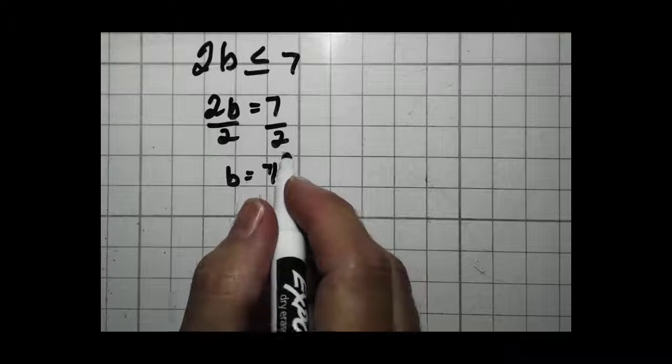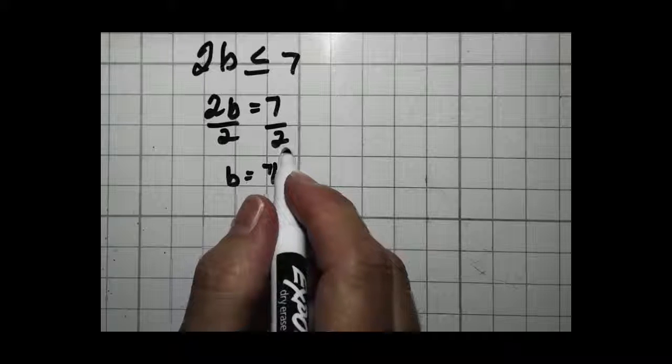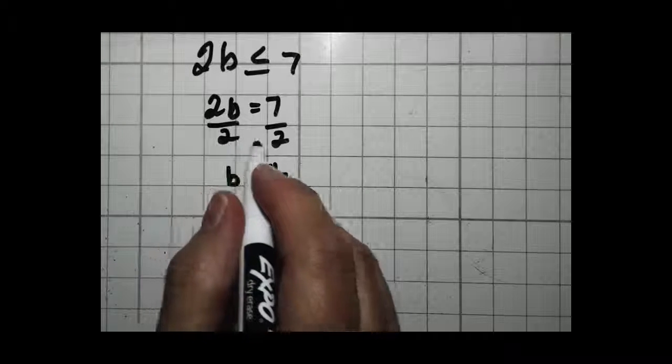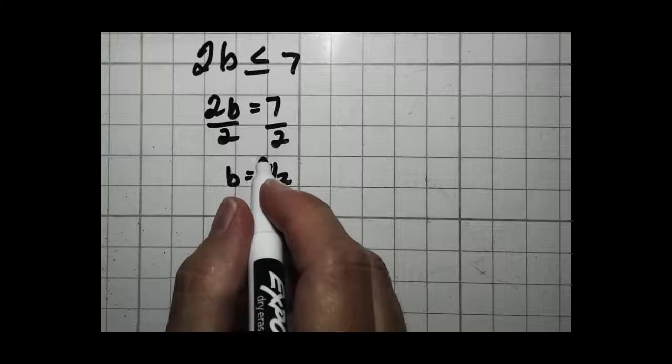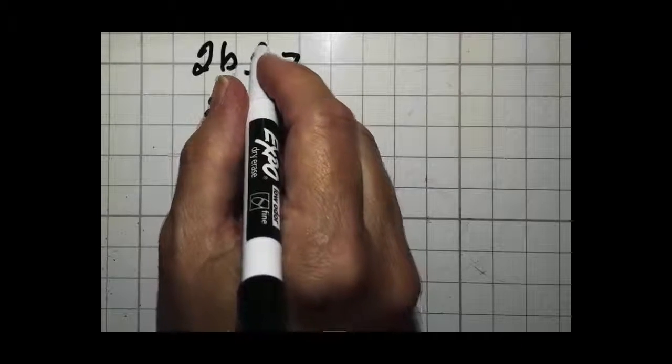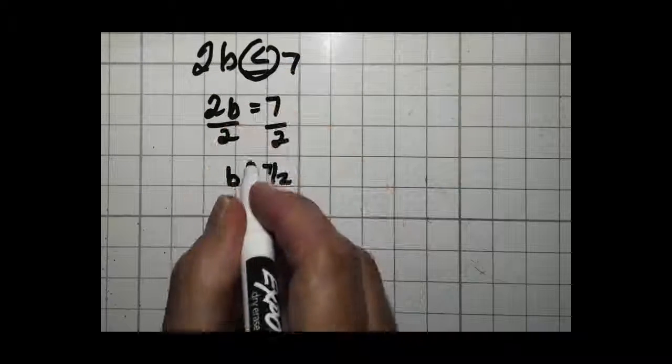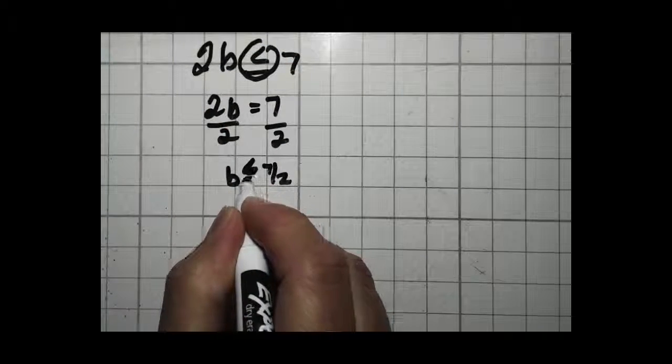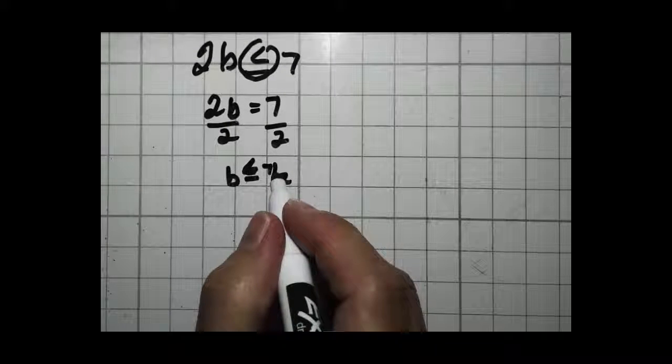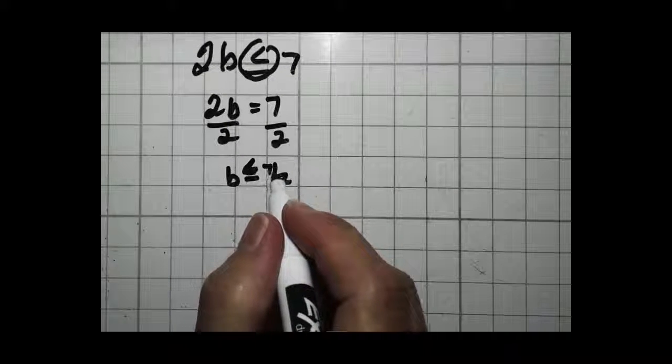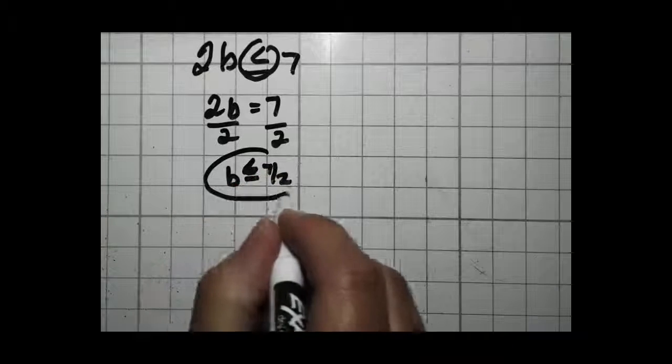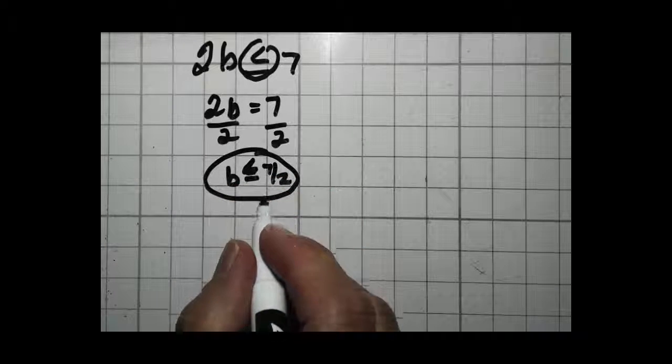And then ask yourself, did I multiply or divide by a negative number? I did divide, but it's not by a negative number. If that's the case, I put my inequality sign back in exactly the same way as it was. If I did multiply or divide by a negative sign, I'm going to flip the inequality sign. So this tells me that b is 7 halves or 3.5.